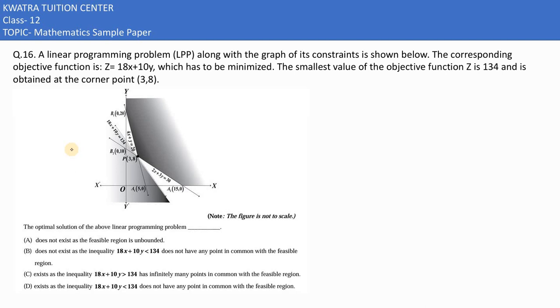Here in this case, an LPP problem is there with the corresponding objective function, which has to be minimized. What do we need to do? We need to minimize it. And the smallest value of the objective function Z is 134.